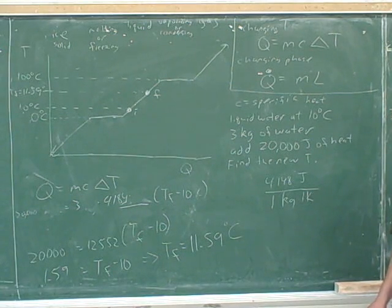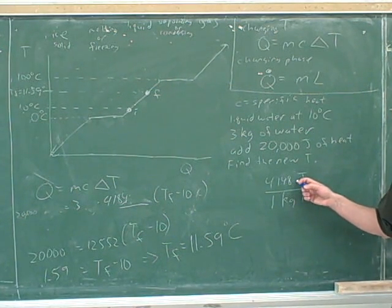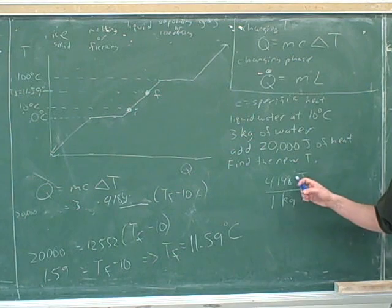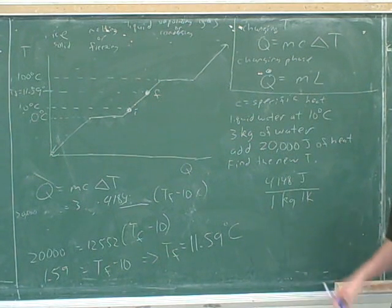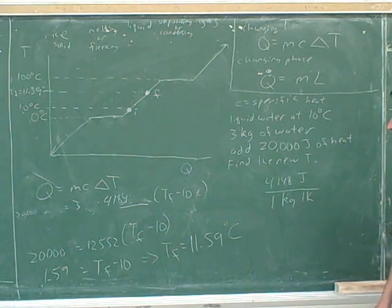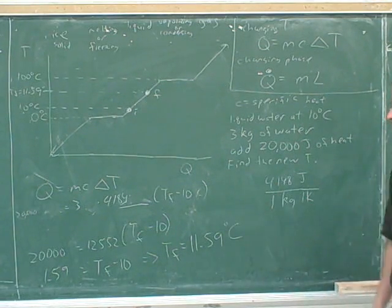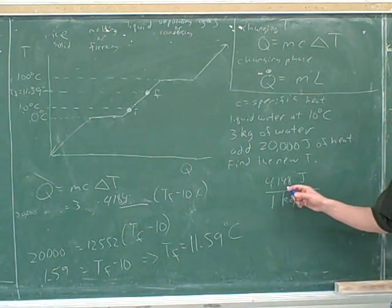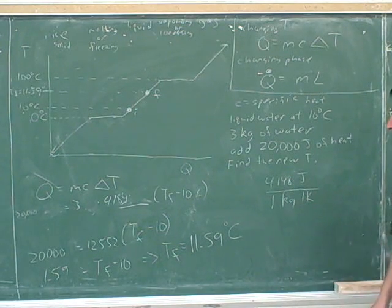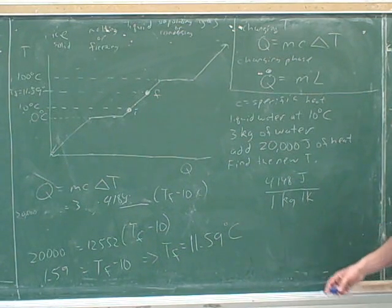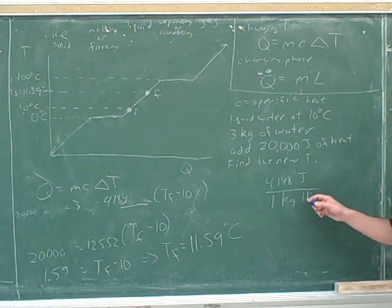This is why I said before that this tells us how hard it is to raise the temperature. Because if this was a bigger number, it would mean it would take more heat to raise the temperature by 1 degree Kelvin. We didn't actually have to think through that logic when we were just plugging into the formula, but it really helps to have a little intuition for what C is telling us.